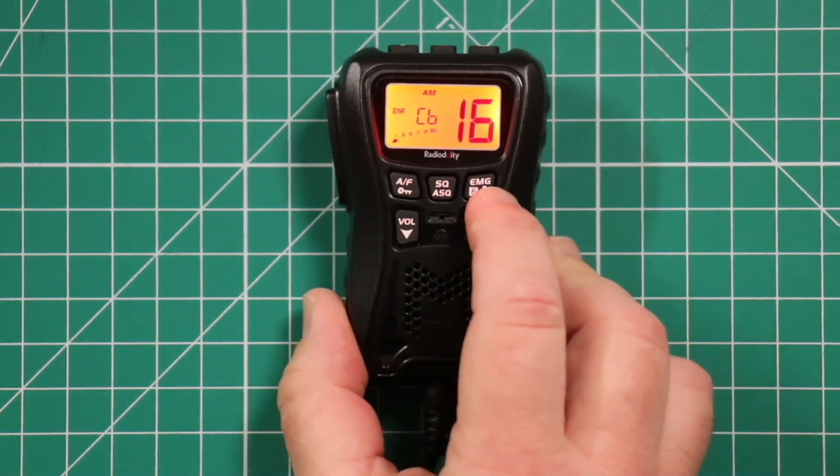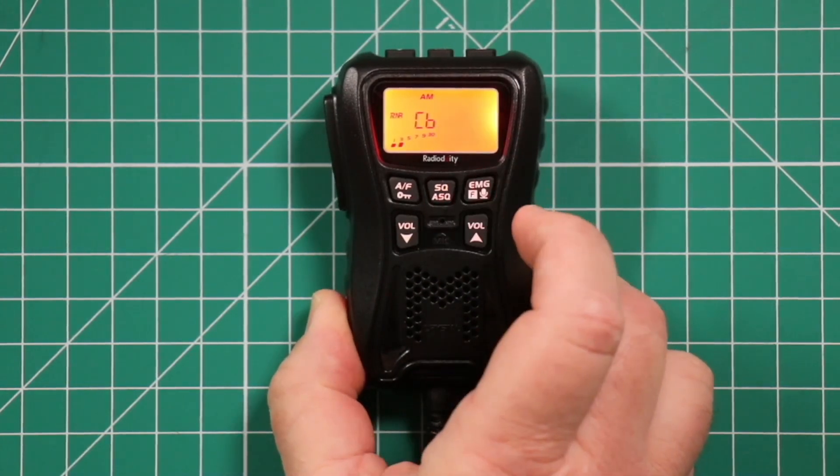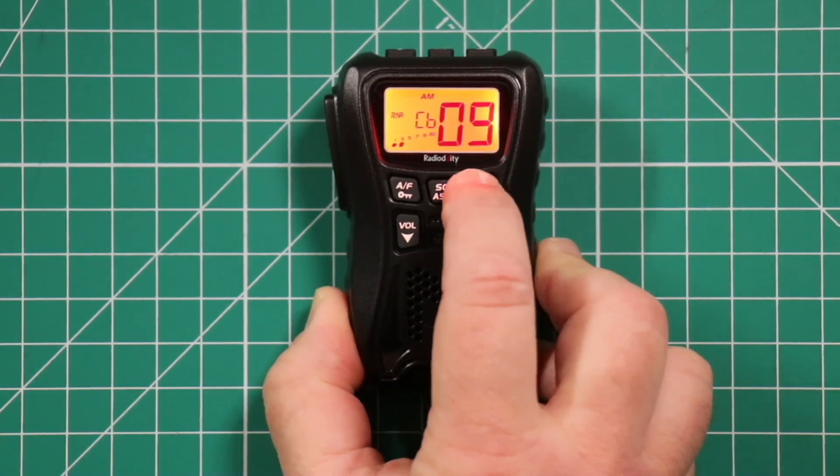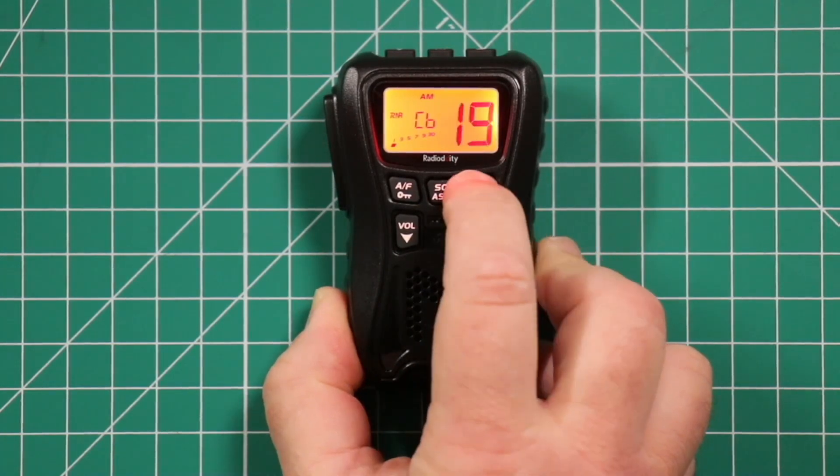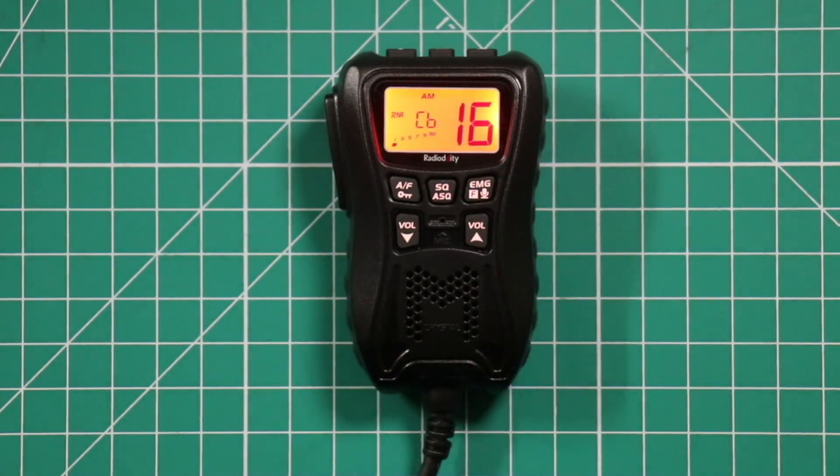Choose your emergency channel. I'm on 16 right now. Push it once takes you to the emergency channel 9. Push again takes you to the trucker channel. And a third press takes you back to the channel you were originally on.